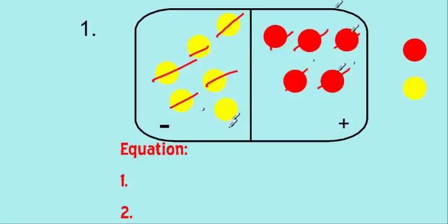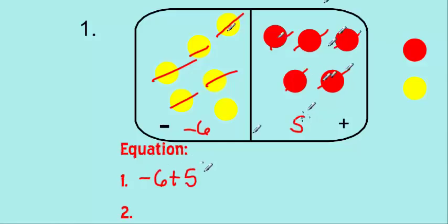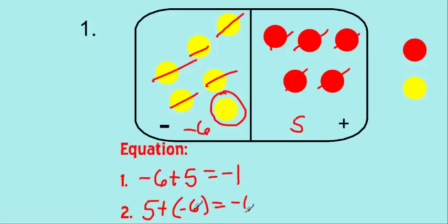To build our equation, we come back to what we started with. We started with six yellow chips, which are negatives, so we have negative six. Then we have five red chips, which are positive, so it's five. Our first equation is negative six plus five equals negative one. Our second equation, using the commutative property, we can add in any order — so five plus negative six equals negative one. I put negative six inside parentheses so that the negative sign is grouped with the six.